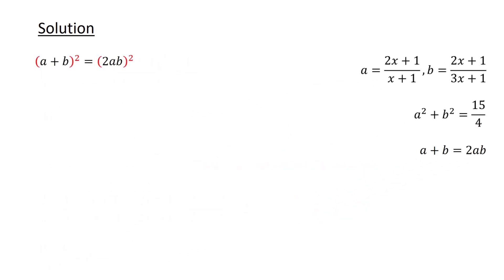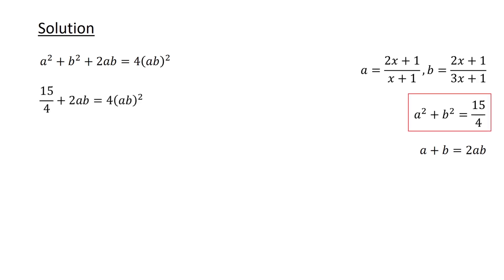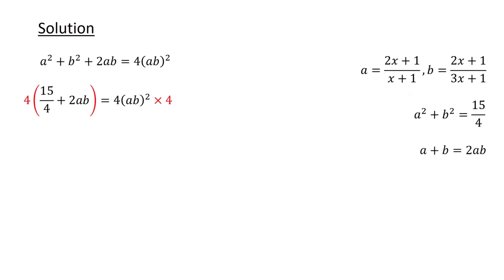Squaring both sides of the equation a plus b equals 2ab, we get a squared plus b squared plus 2ab is equal to 4ab squared. Substituting a squared plus b squared equals 15 over 4 into the equation, multiplying both sides by 4 to clear the denominator, and rearranging terms, we obtain 16ab squared minus 8ab minus 15 is equal to 0.